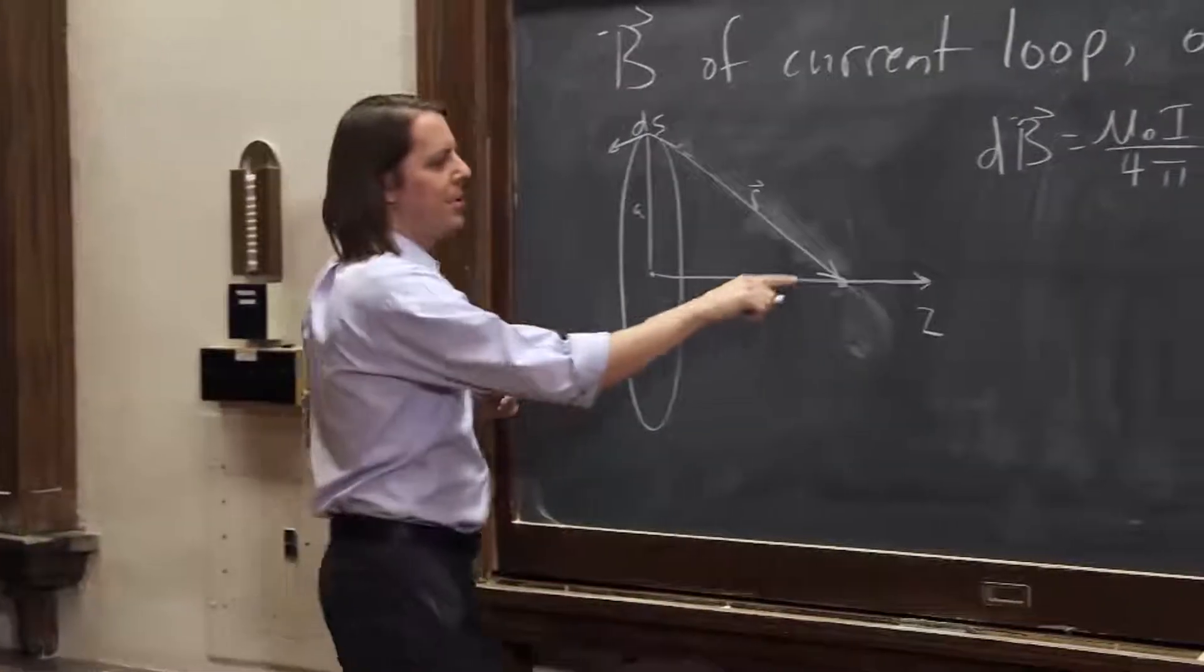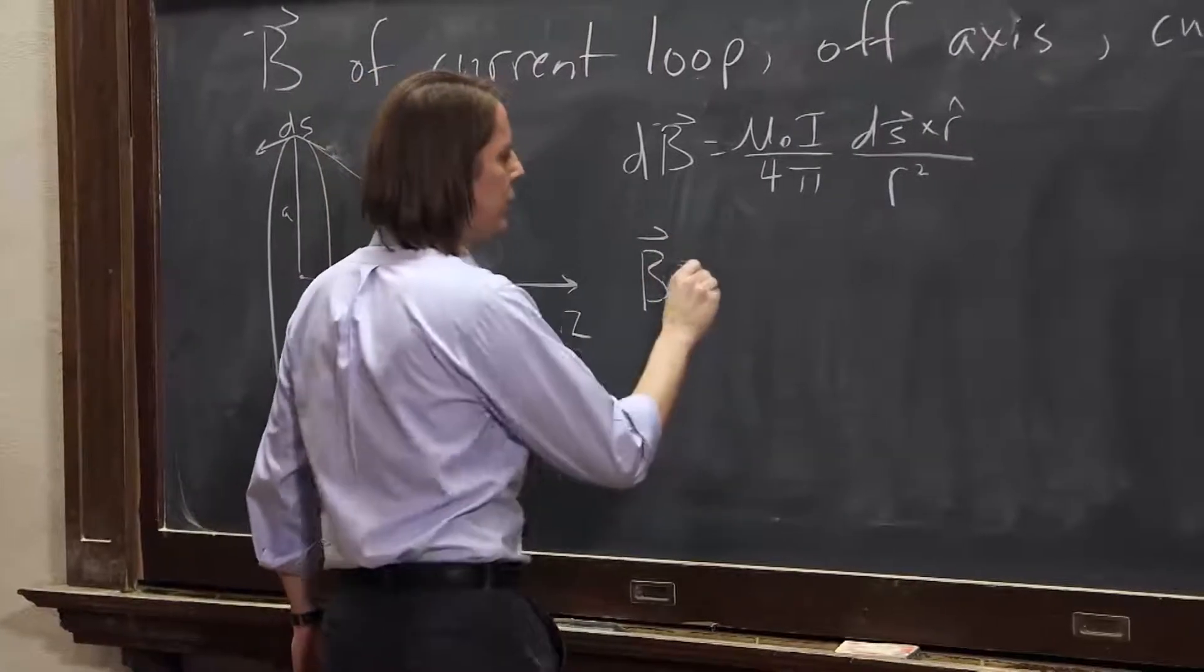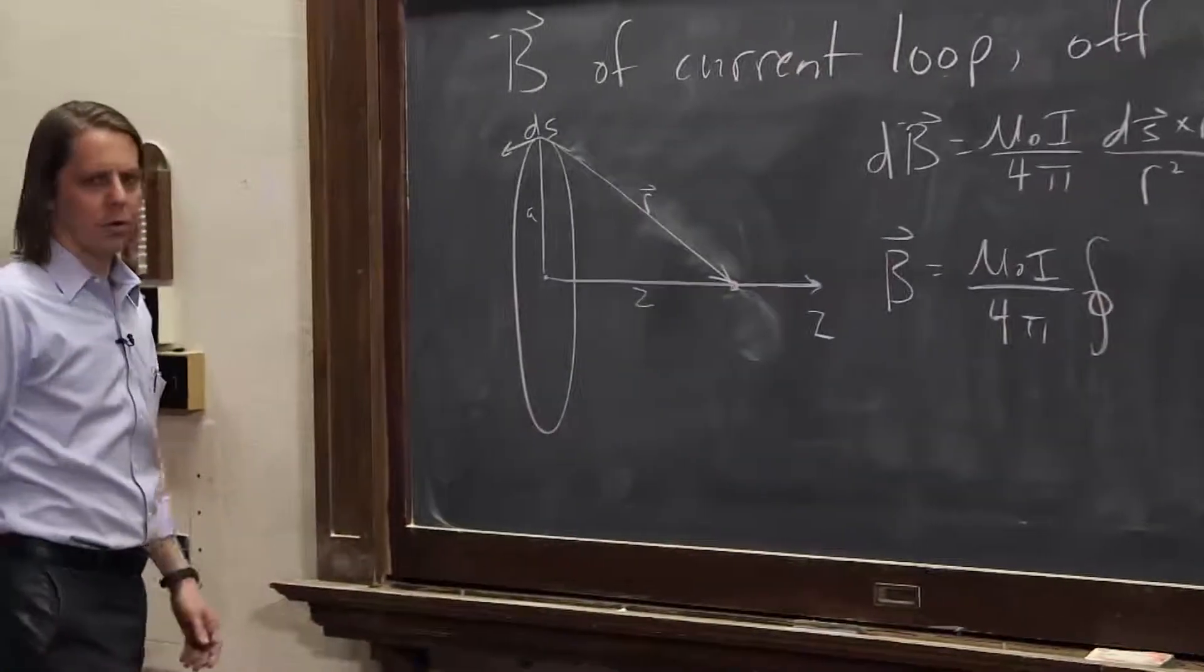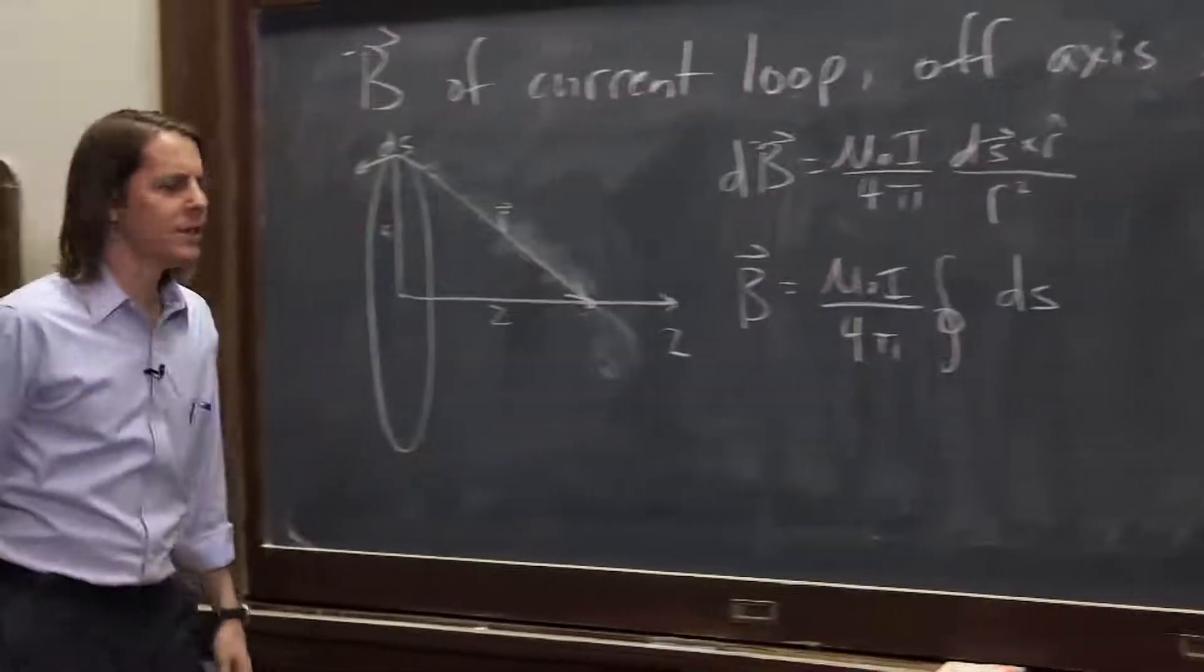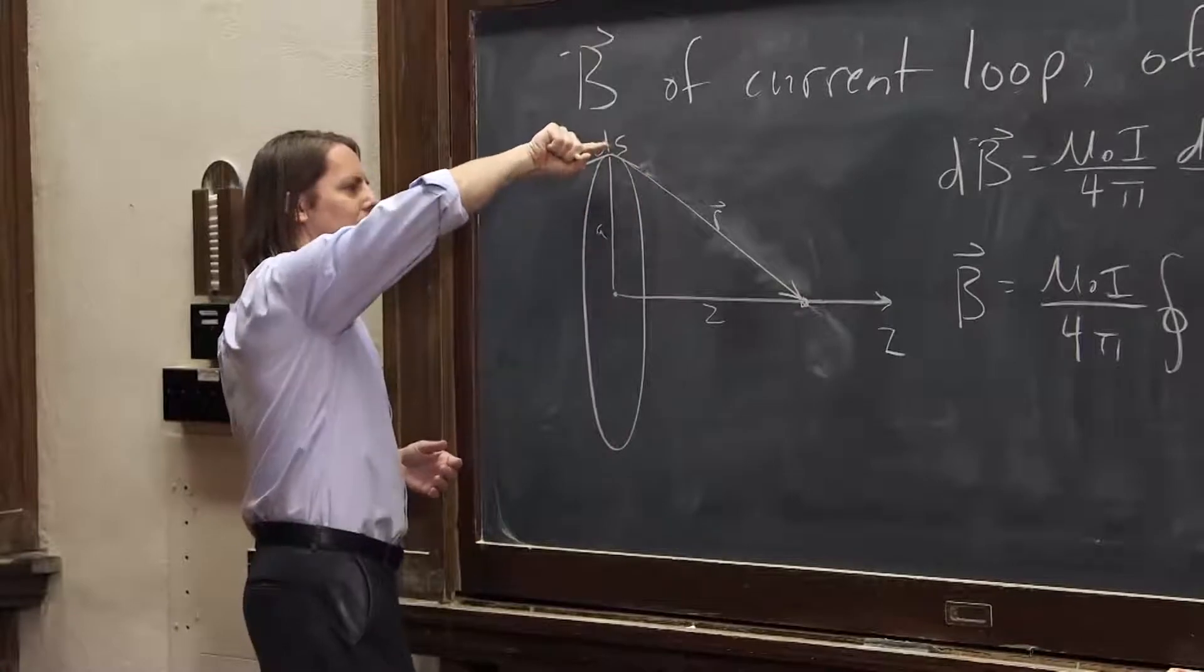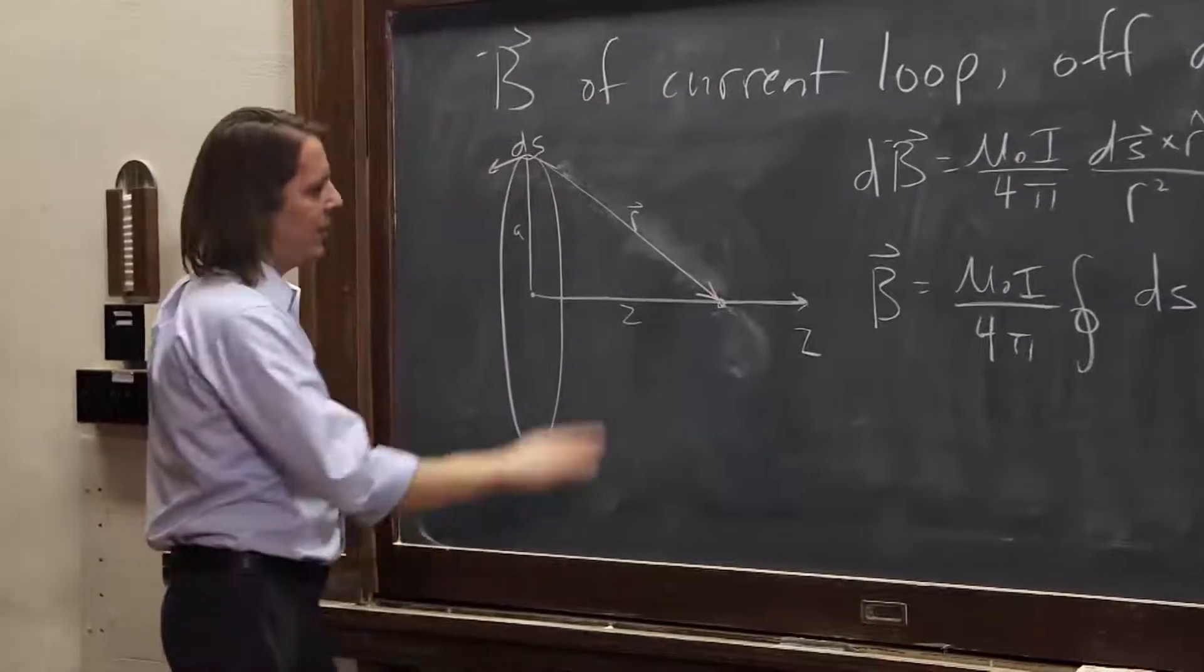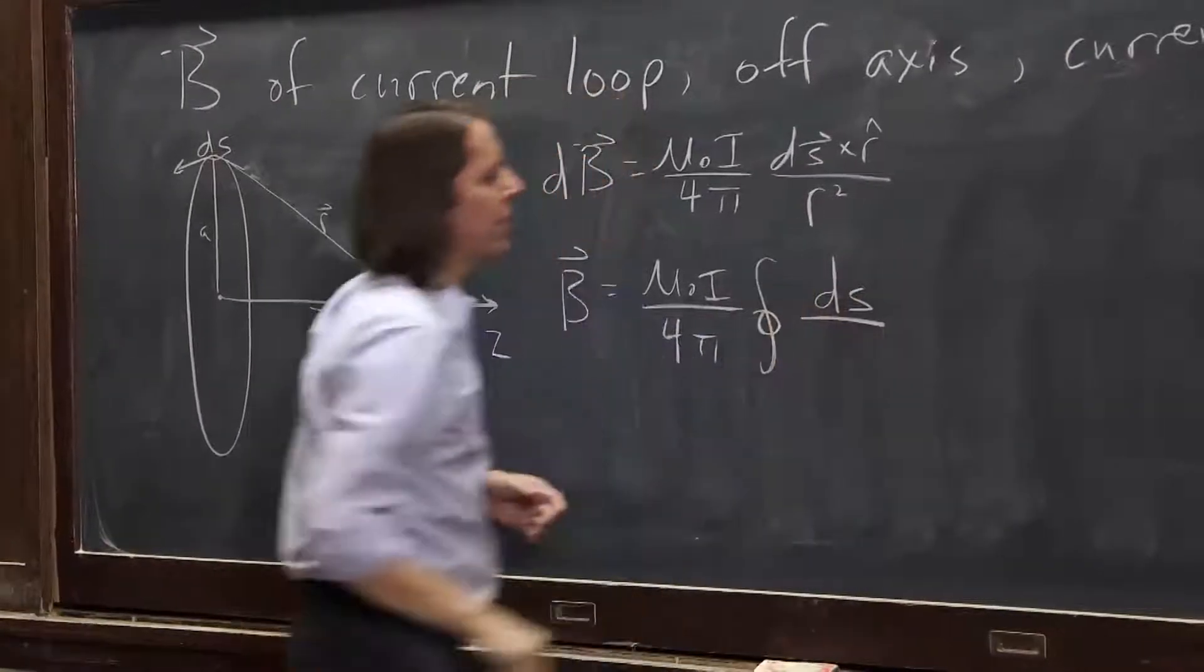So all we've got to do is add up the field we get here as we go around the circle. Okay. So let's see. B is going to be, let's pull out, go ahead and pull out what constants we know we have. Mu naught I over 4 pi times the integral around a circle. We have dS cross r over r squared. Okay. Well, we know dS is dS. And we know actually it's still true that dS is always perpendicular to r. It's hard to show in this drawing that dS is this way. R, even though it's pointing down, they're still at 90 degrees to each other. And anywhere you go, they're actually going to be at 90 degrees to each other.